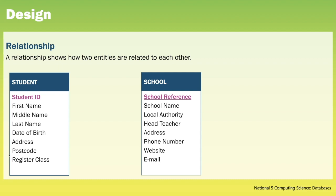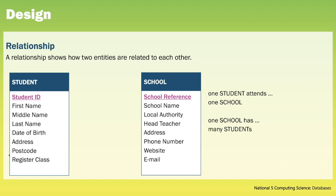At National 5 we will normally work with two tables in our databases and these two tables will have a relationship between them. This relationship shows how two entities are related to each other. So if we think about student and school — one student attends how many schools, one or many? Well it's one school. If we look at the relationship from the other direction, one school has one or many students — in this case it is many students. And this gives us a one-to-many relationship.